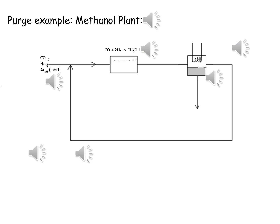15% of the carbon monoxide is converted, hence the product stream from the reactor contains methanol as well as unreacted carbon monoxide and hydrogen. To recover the methanol, this product stream is cooled. Methanol condenses while carbon monoxide and hydrogen remain as gases. Methanol, being a liquid, is easily separated from the unreacted gases.